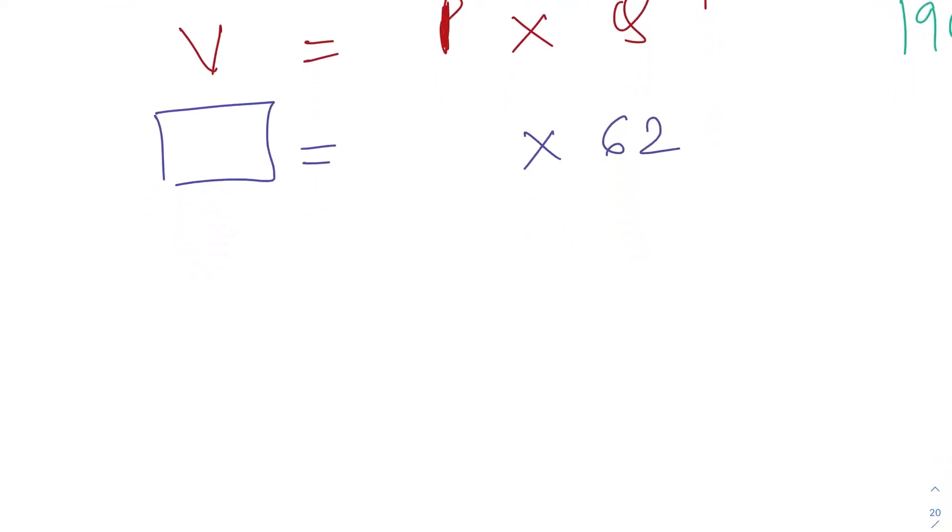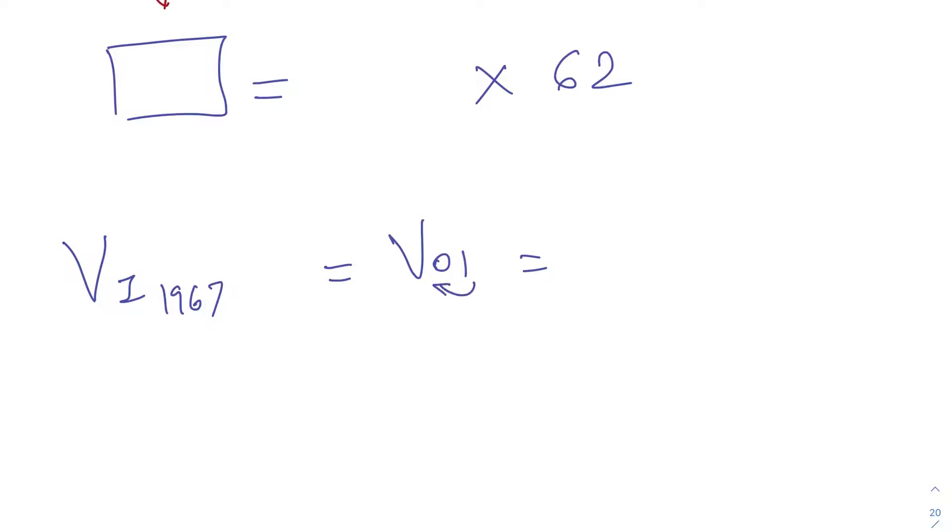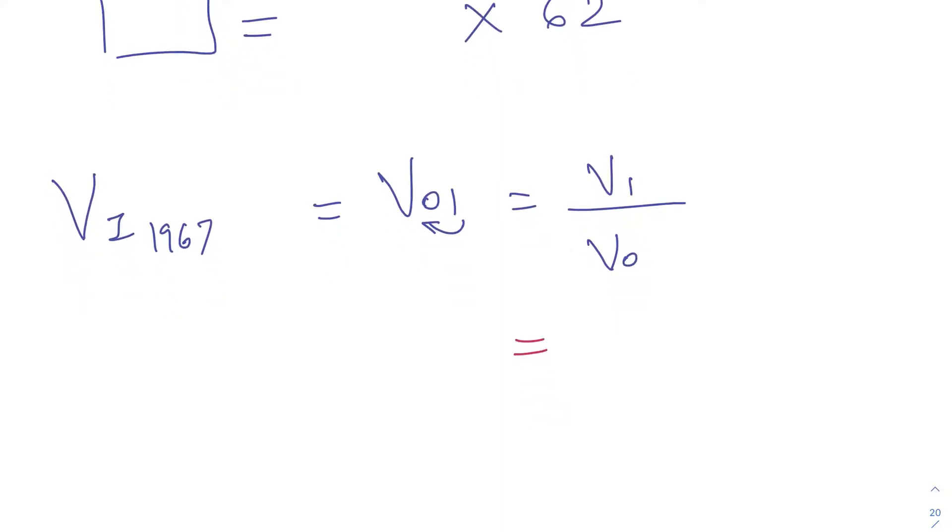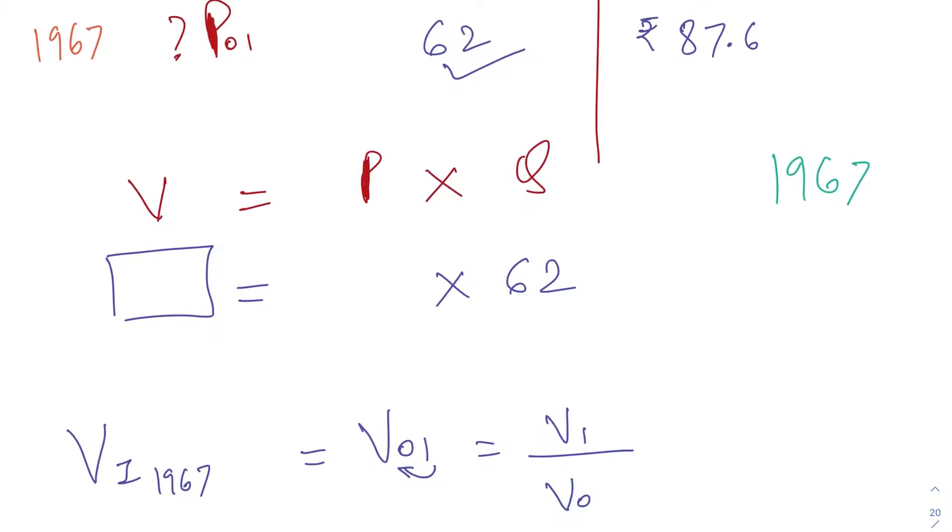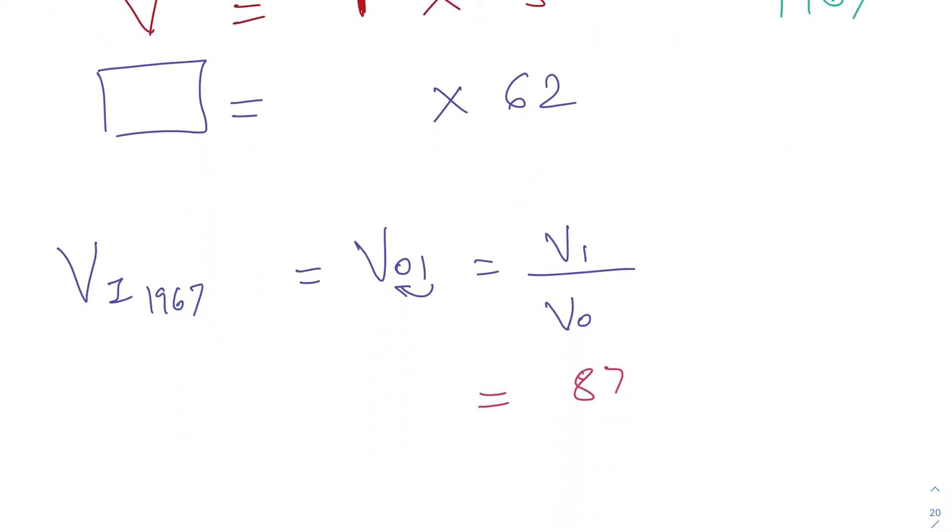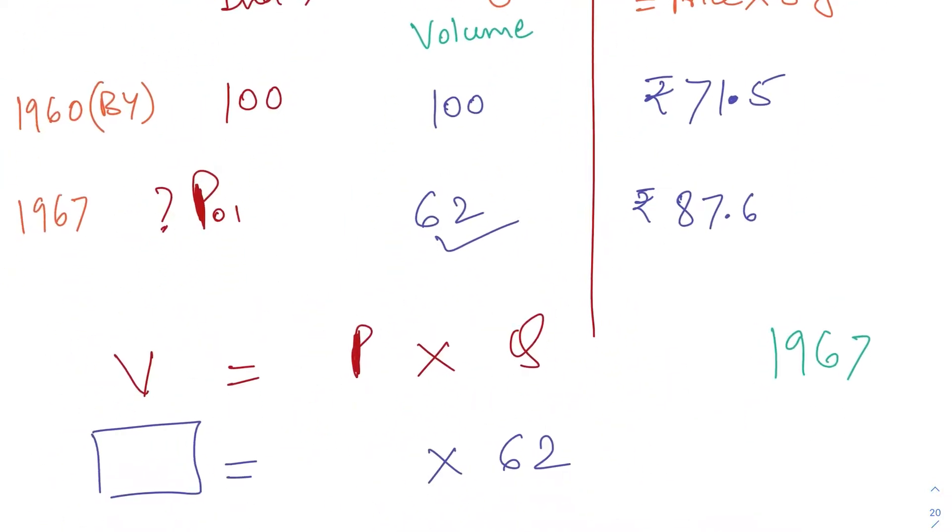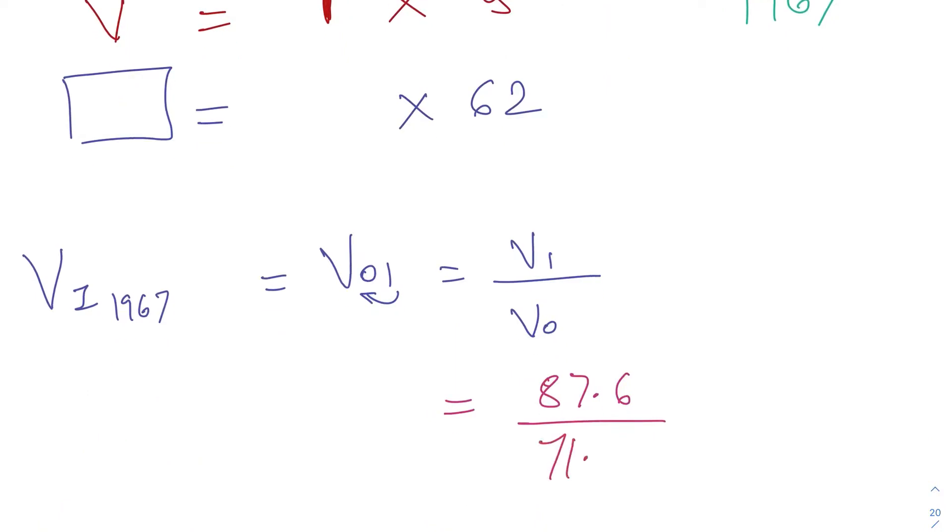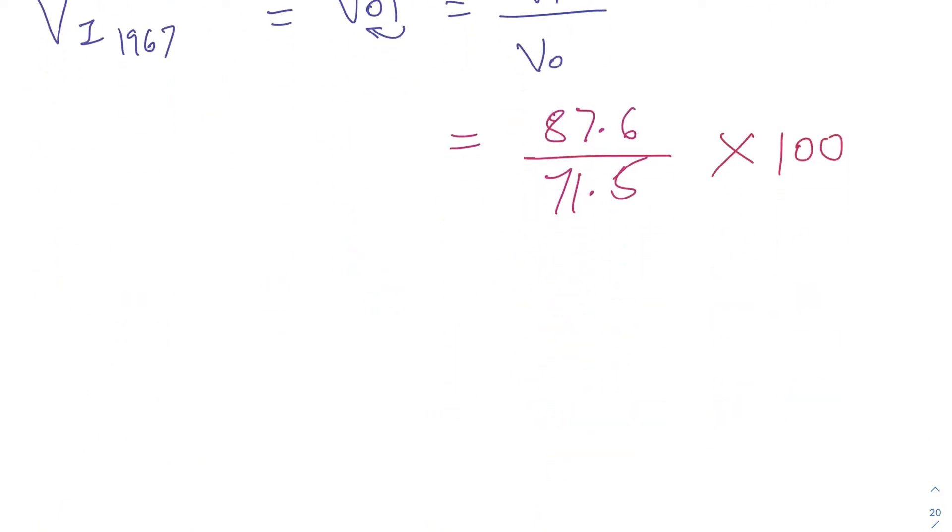So value index number of 1967, we can show it as V₀₁. V₀₁ is current upon base—that is the main thing—V₁ upon V₀. Value of current year upon value of base year. We will obviously do this for index number. How much is the value of current year? The value of 1967 in the numerator—how much is the value of 1967? It is ₹87.6 upon value of base year, which is ₹71.5. Check how much is the index number: 122.52. This is the value index number of 1967.